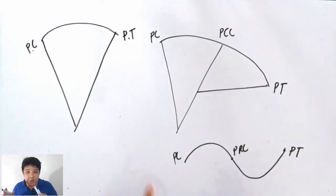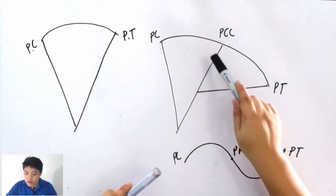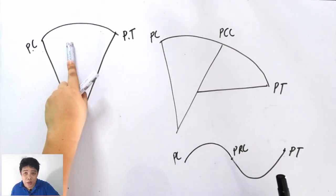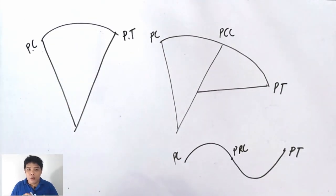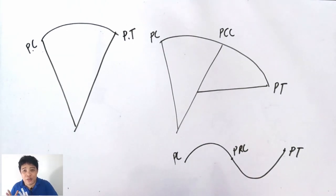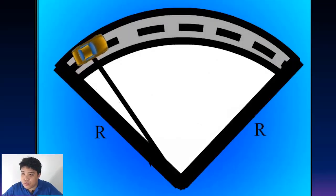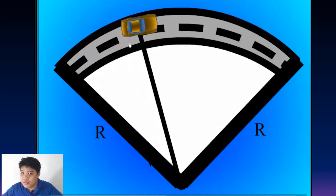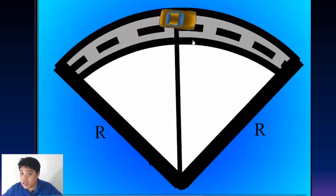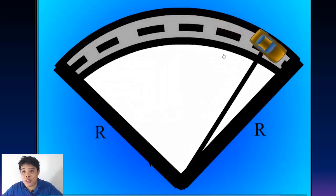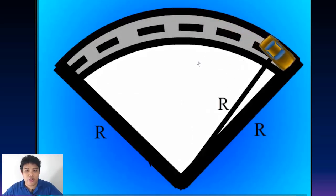I'm just introducing the different types of horizontal curves. Compound and reverse curves are just made of simple curves. What is special about the transition curve and what makes it different? As the vehicle traverses the simple curve, it experiences a constant value of radius of curvature.